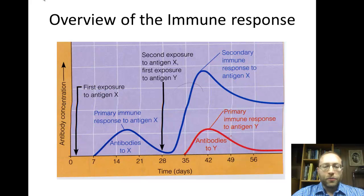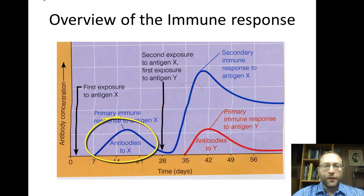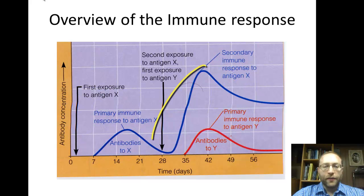The response in the immune system: first, there is nothing at all. Then you start to get a bit of response, it goes higher up, and then we defeat the pathogen. Since the pathogen is defeated, the number of antibodies we make go down. The number of immune cells for this particular pathogen first goes up, then goes down. When we get exposed again in the second exposure, we get a much quicker response.